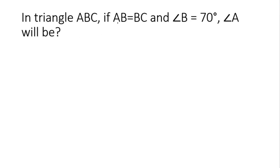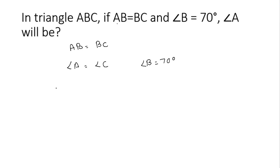Next question: in triangle ABC, if AB is equal to BC and angle B is equal to 70 degrees, what is angle A? Because AB is equal to BC, these two sides are equal in length. The angles opposite to equal sides are also equal, which means angle A must be equal to angle C. Angle B is equal to 70 degrees, and we know the sum of angles of a triangle is 180 degrees.